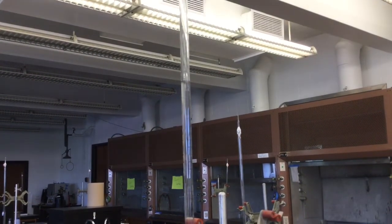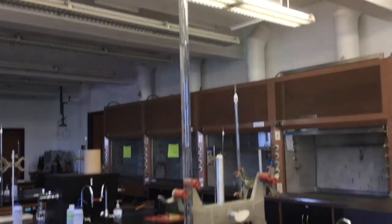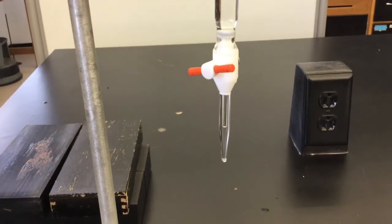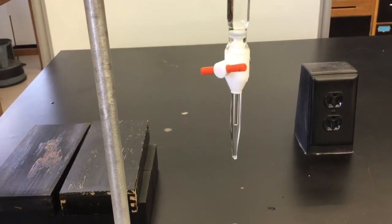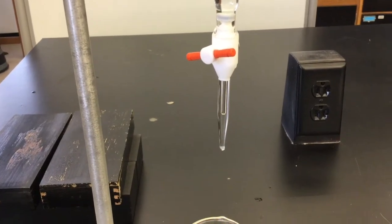Before you begin the titration, you're going to need to make sure there are no air bubbles. Check the burette itself and the bottom. Notice that there is an air bubble. The presence or absence of an air bubble can change the measurement that we have on our burette.